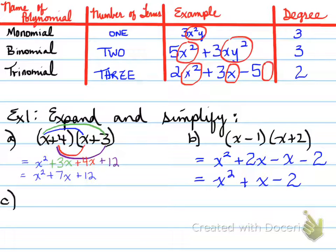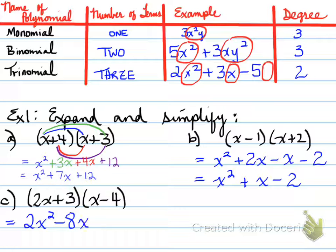Let's keep moving forward. 2x plus 3 times x minus 4. Expanding this, you get 2x times x, which is 2x squared. 2x times minus 4 is minus 8x. Plus 3 times x is plus 3x. And finally, plus 3 times negative 4 is negative 12. So you have 2x squared minus 8x plus 3x minus 12. Collecting like terms, you should have 2x squared minus 5x minus 12.